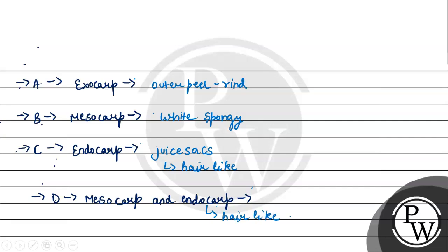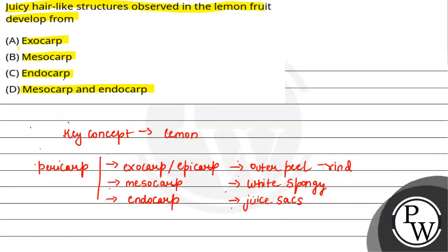Therefore, यह option D गलत है, and therefore the answer to this question is only option number C, which is endocarp. Hope you understood it well, best of luck.